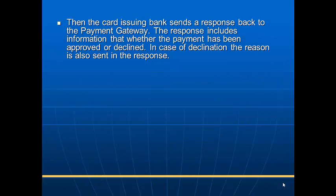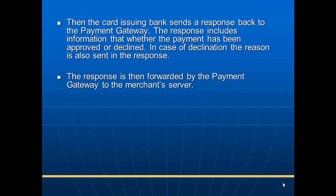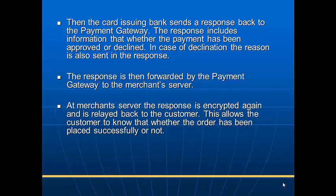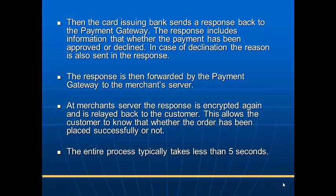The issuing bank sends the response back to the payment gateway. The response includes information about whether the payment has been approved or declined. In case of a decline, the reason is also included in the response. The response is then forwarded by the payment gateway to the merchant server, where it is encrypted again and relayed back to the customer, letting them know whether the order has been placed or not.